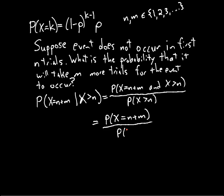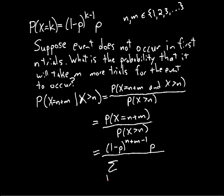And then the bottom is the probability that x is greater than n. Since we have a formula for this random variable's distribution, the top is just plugging n plus m into the formula: (1-p)^(n+m-1) times p. And then on the bottom we have the sum from k equals n plus 1 to infinity of (1-p)^(k-1) times p.